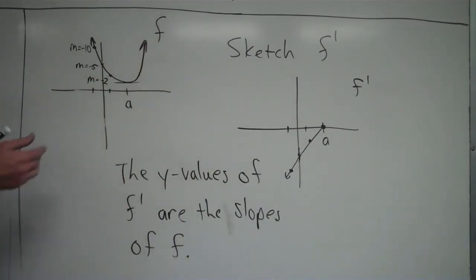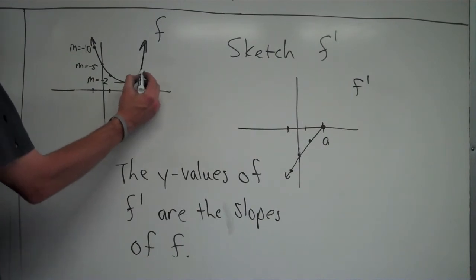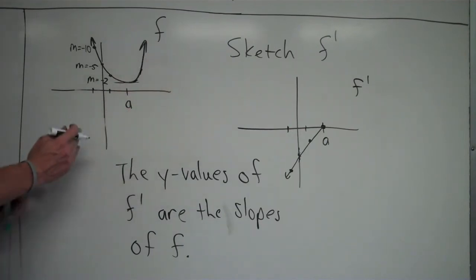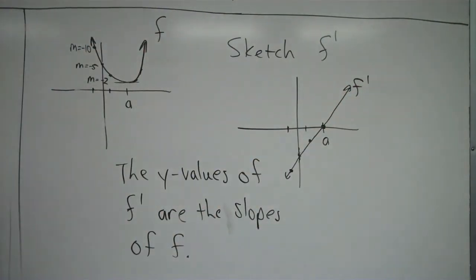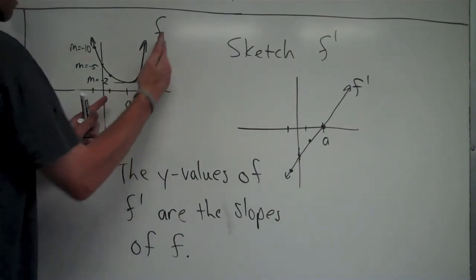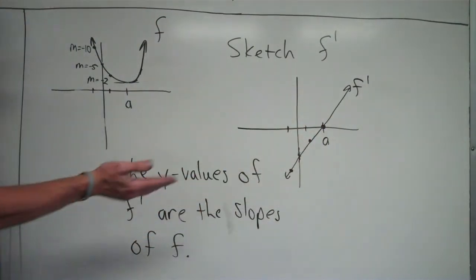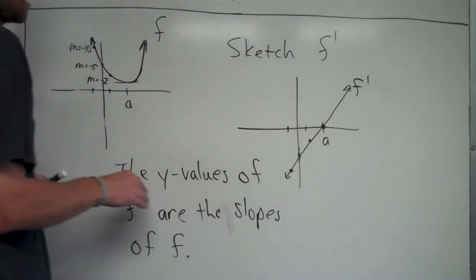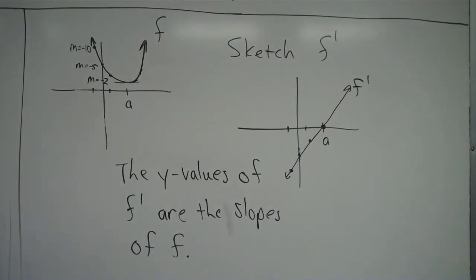On the right-hand side of a, the same idea applies. The slopes are positive — they start at zero at x equals a and get bigger and bigger as the x-values move further to the right. So the y-values of f prime should be positive and get larger as we move right. That is an example of the sketch of f prime. Wherever you see negative slopes on f, you see negative y-values on f prime; wherever you see positive slopes on f, you see positive y-values on f prime.